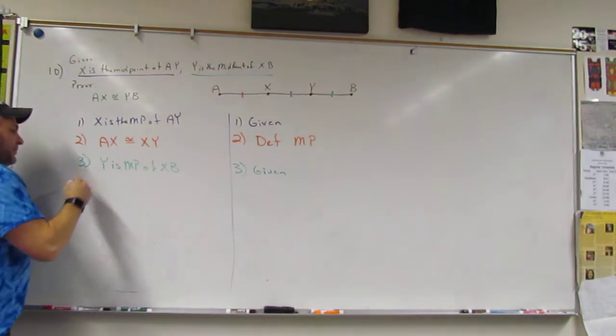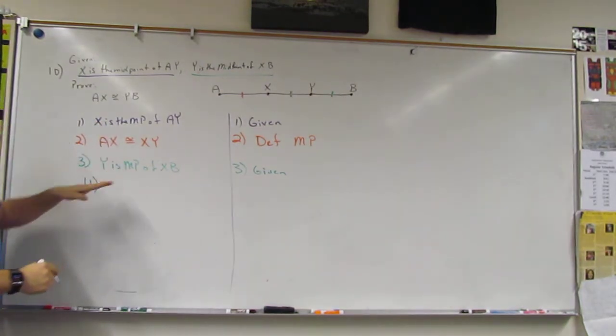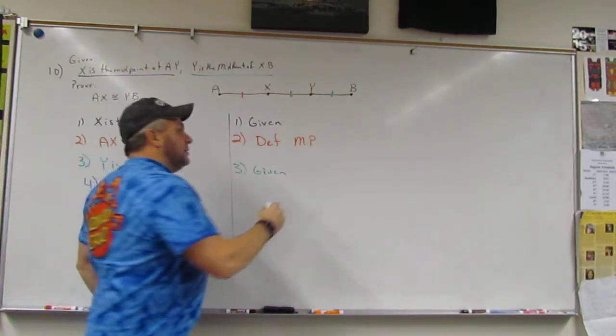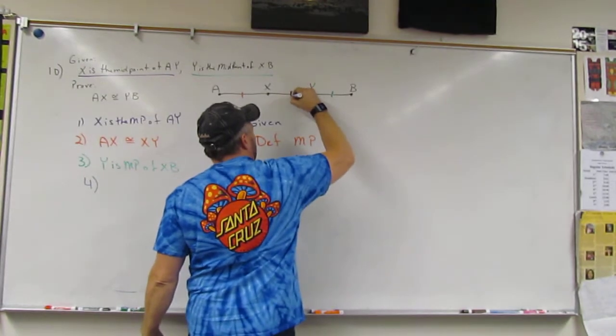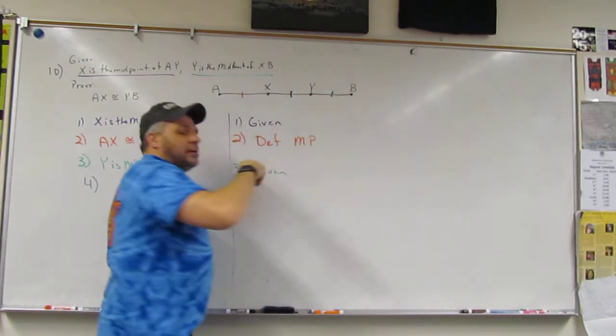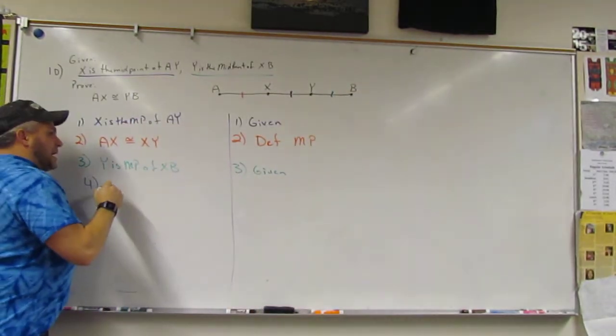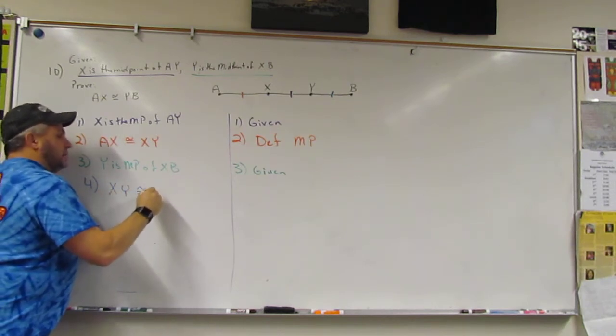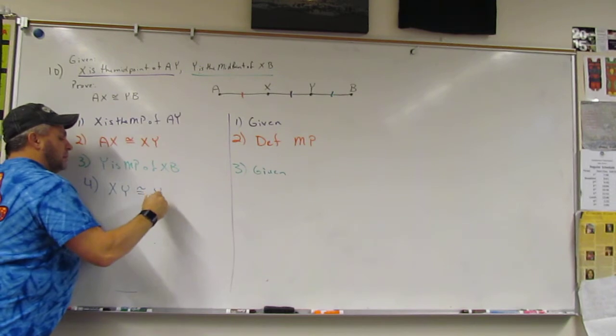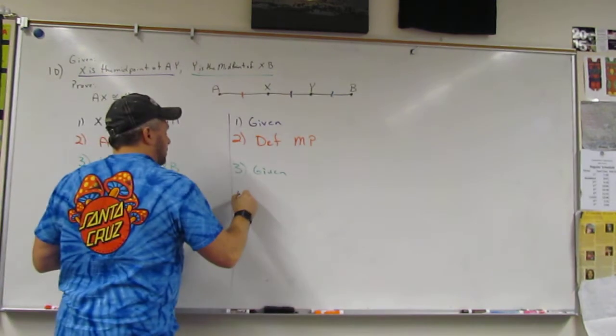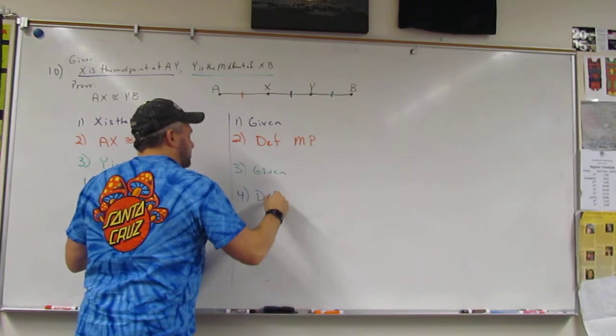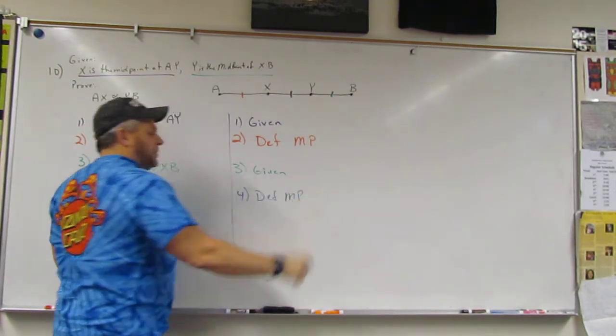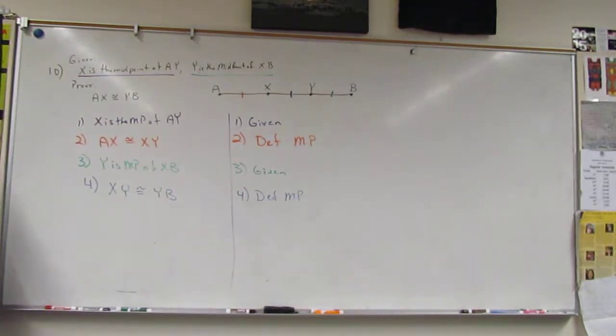And then my next step, I've got to get a different color. My next step was to extrapolate this. So XY is congruent to YB. And it's definition of a midpoint. And again, definition of a midpoint. So far, so good.